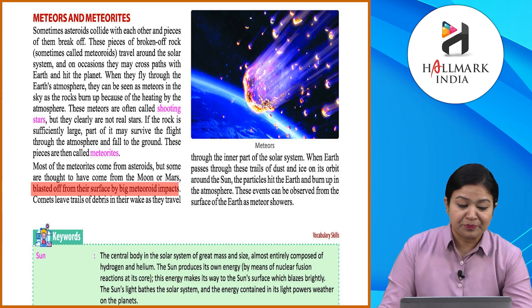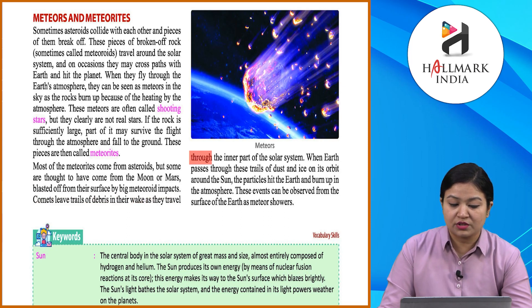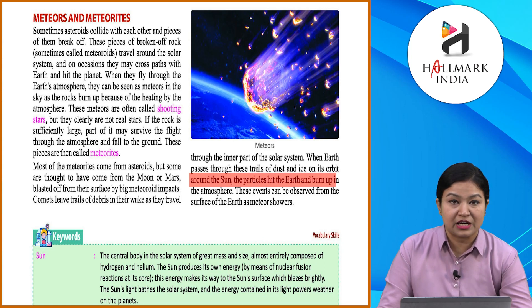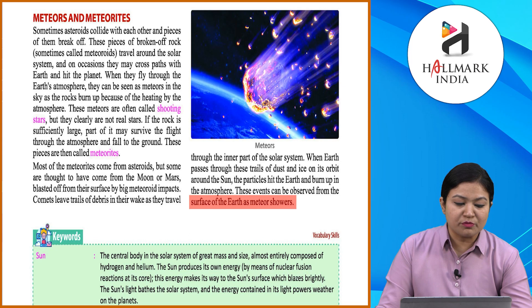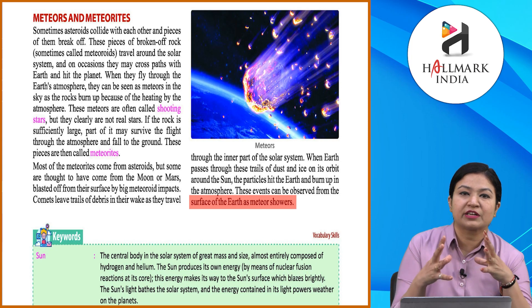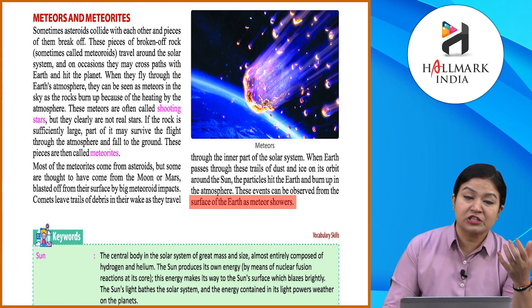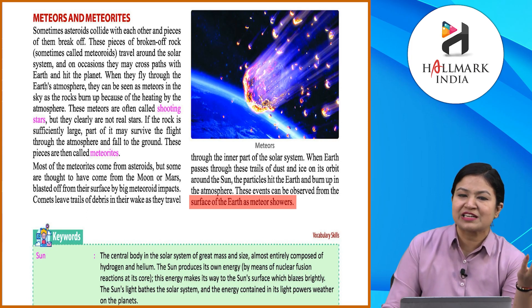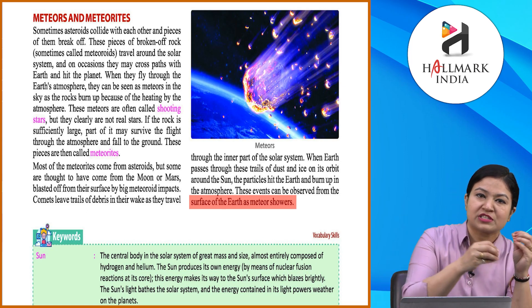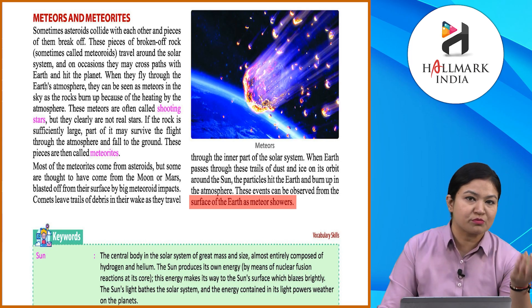Comets leave trails of debris in their wake as they travel through the inner solar system. When Earth passes through these trails of dust and ice on its orbit around the Sun, the particles hit the atmosphere and burn up. These events can be observed from Earth's surface as meteor showers. What people call shooting stars are actually these burning particles — they are not real stars.